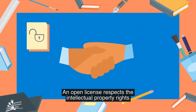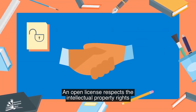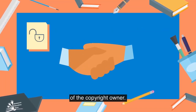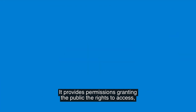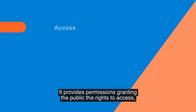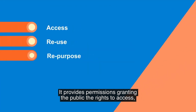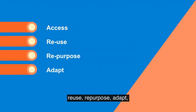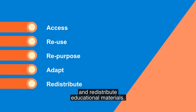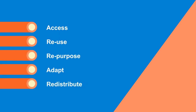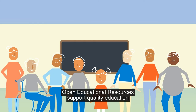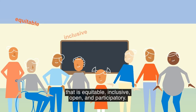An open license respects the intellectual property rights of the copyright owner. It provides permissions, granting the public the rights to access, reuse, repurpose, adapt and redistribute educational materials. Open Educational Resources support quality education that is equitable, inclusive, open, and participatory.